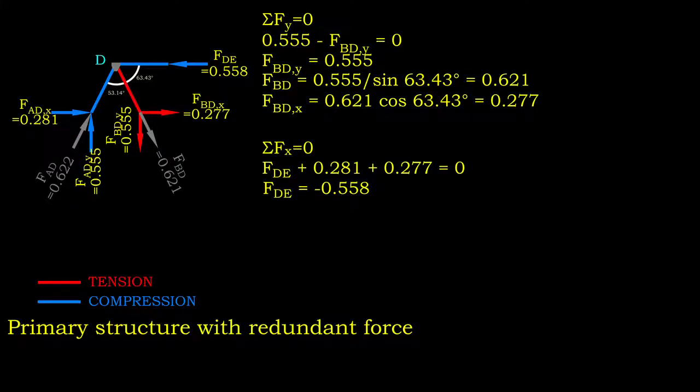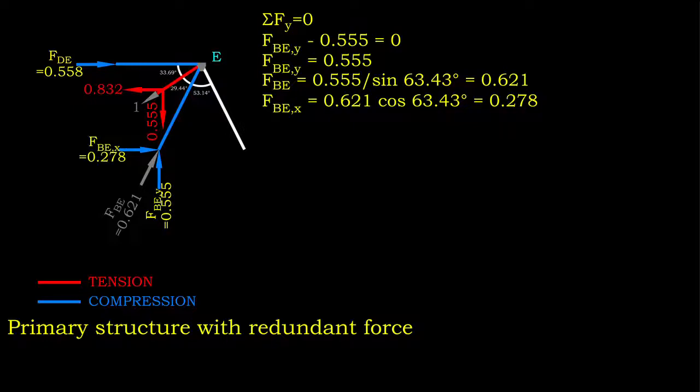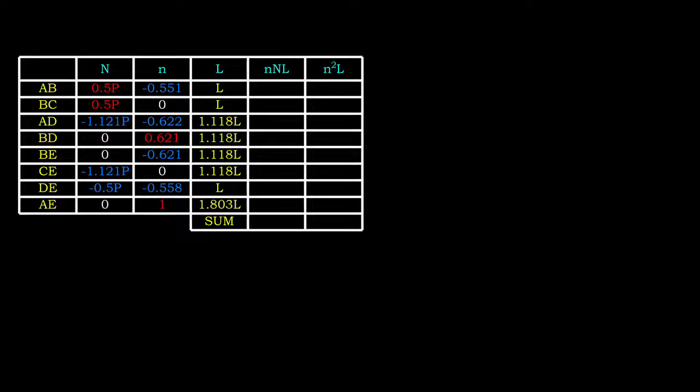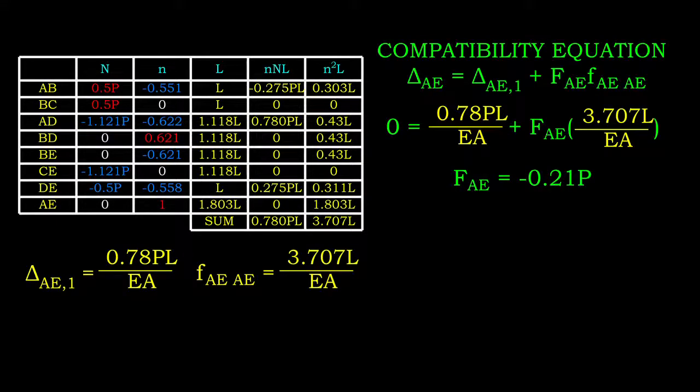Now, let's construct a table and input the truss member properties and forces. We have two columns to fill and both are the key to the solution of statically indeterminate truss. After we obtain the deformation under both cases, we substitute it back to our compatibility equation. By solving it, we determine the force developed in member AE.